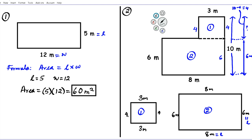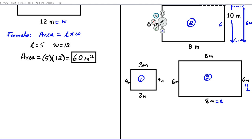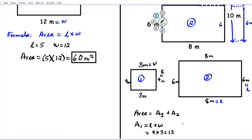So rectangle one has a length of 4 and a width of 3. Now we're good to go. When you have an irregular shape, break it apart, label all dimensions, do any arithmetic needed to find missing measures, then find the area. The area of the irregular shape equals area of rectangle one (A1) plus area of rectangle two (A2). For A1: length times width = 4 times 3 = 12 square meters.